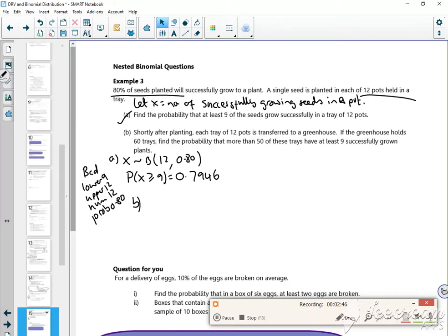Then for part B, I take these trays and stick them in a greenhouse. The greenhouse has 60 trays. It says find the probability that more than 50 of these trays have at least 9 successfully growing plants. This was my success rate from part A. That's going to be my new p-value.